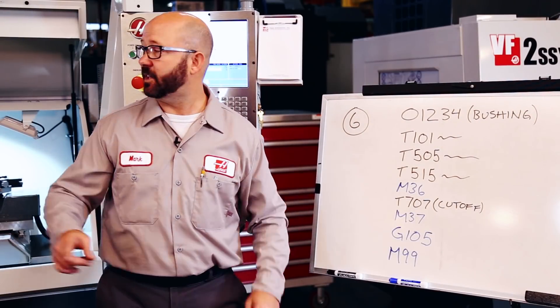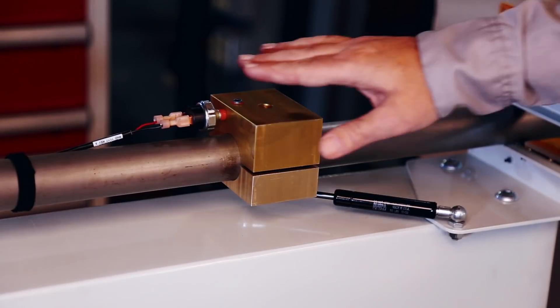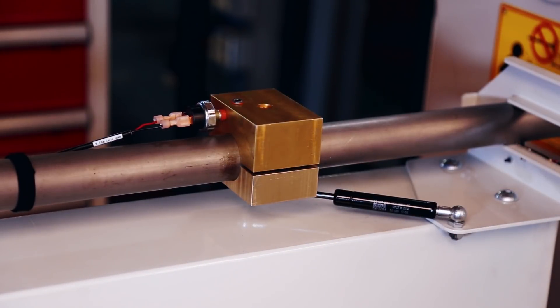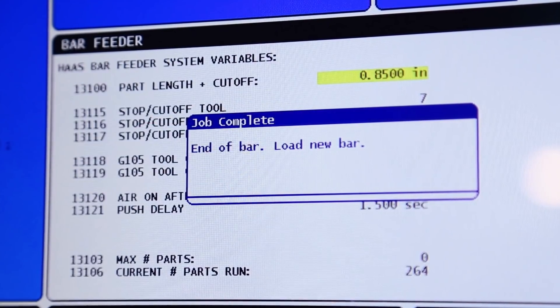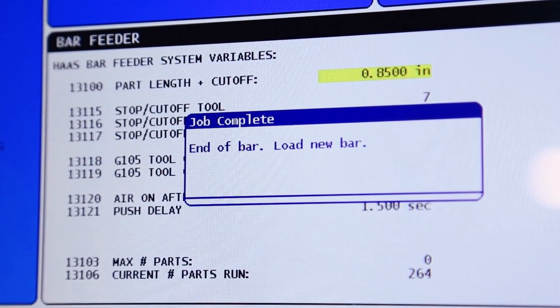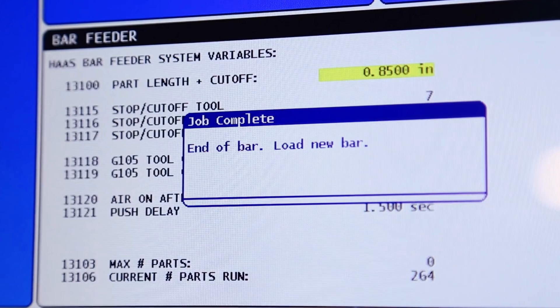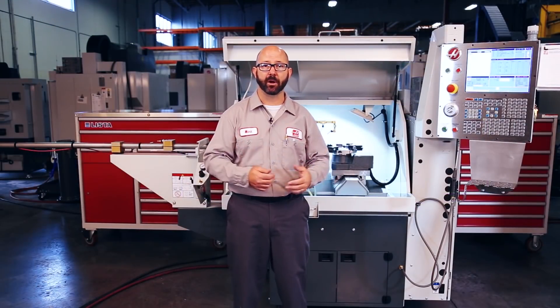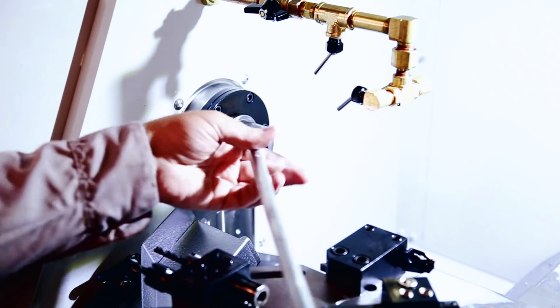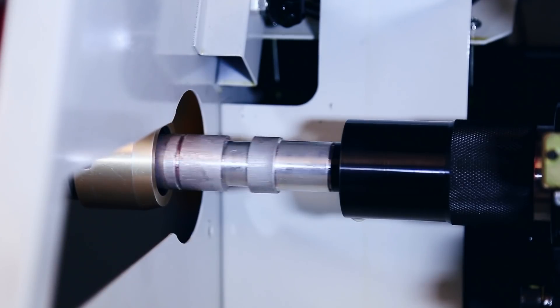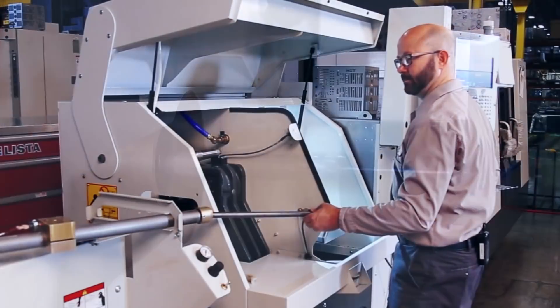At that point, something will come up on your screen saying that we've reached the end of our bar and it's time to load up another one. And if we wanna keep running parts and load a new bar, it's easy. We'll pull out our end of bar remnant, push our push rod back into the bar tube, and load up a new bar, like we did at the beginning of this video.